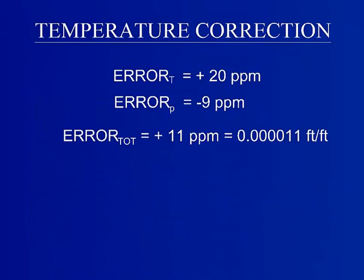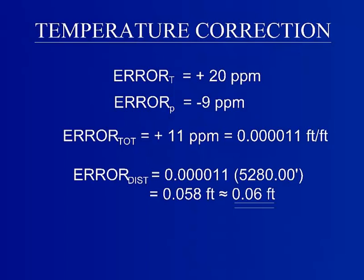Combining the temperature and pressure error results in a total correction. The total correction is positive 11 parts per million, or 0.000011 feet per feet. To find the amount of error per a certain distance, multiply the total correction determined from the graph by the distance given in the initial problem.